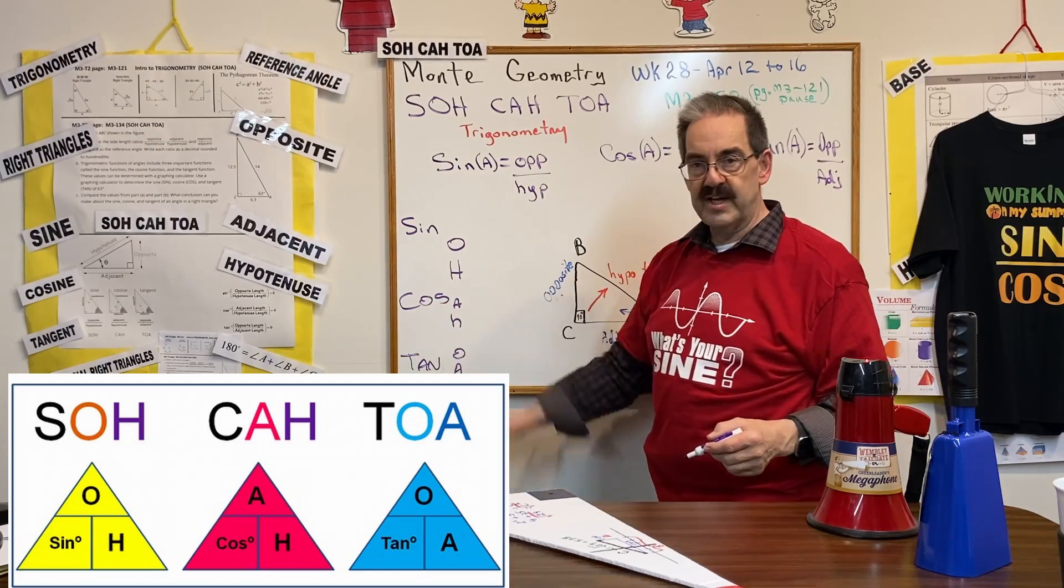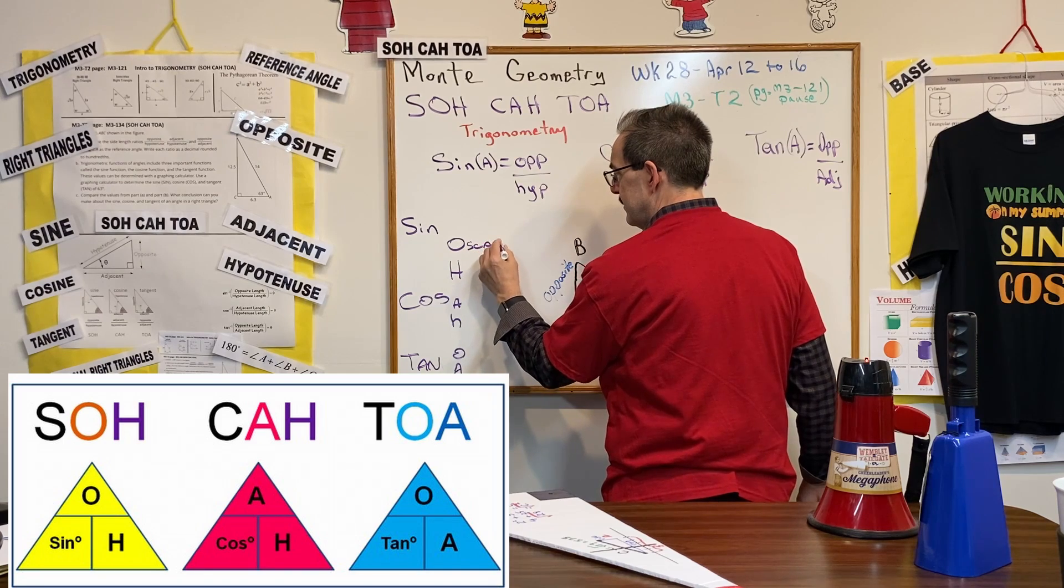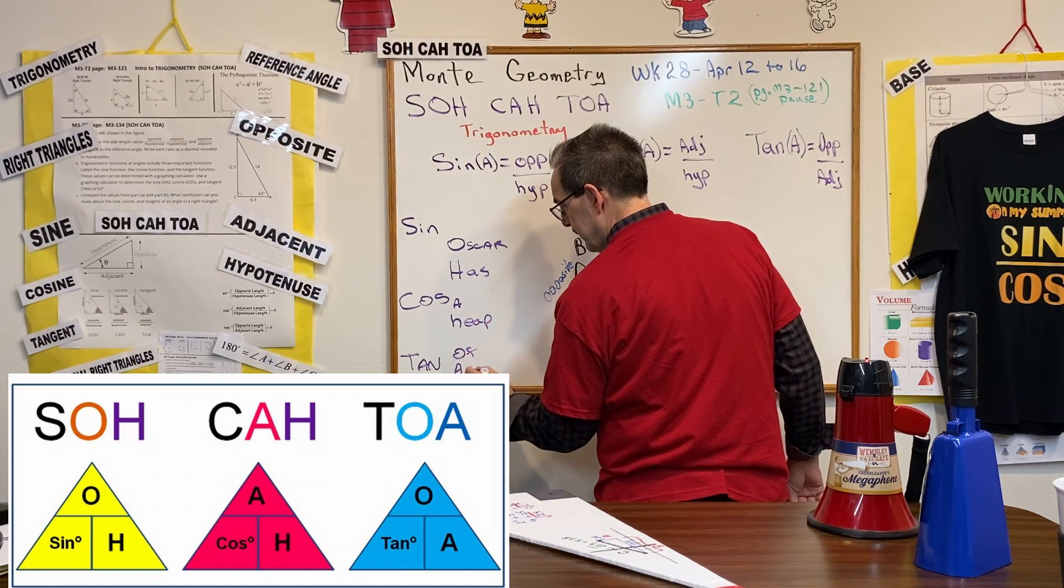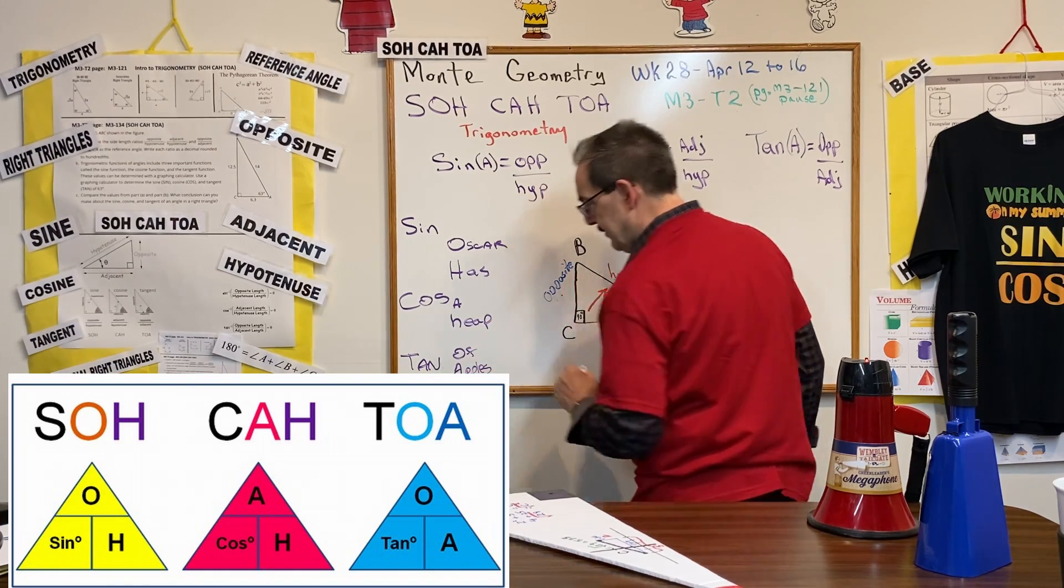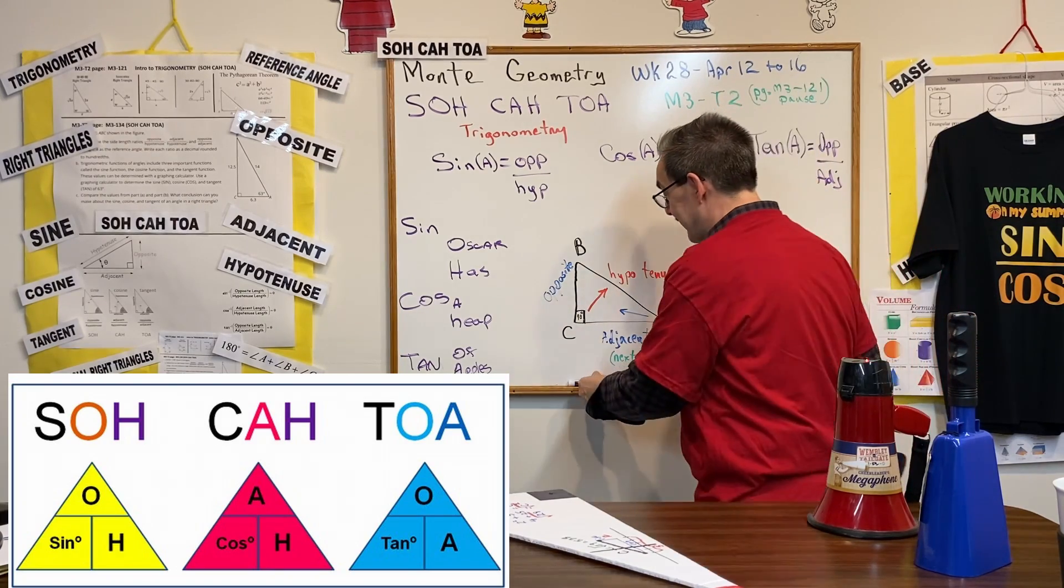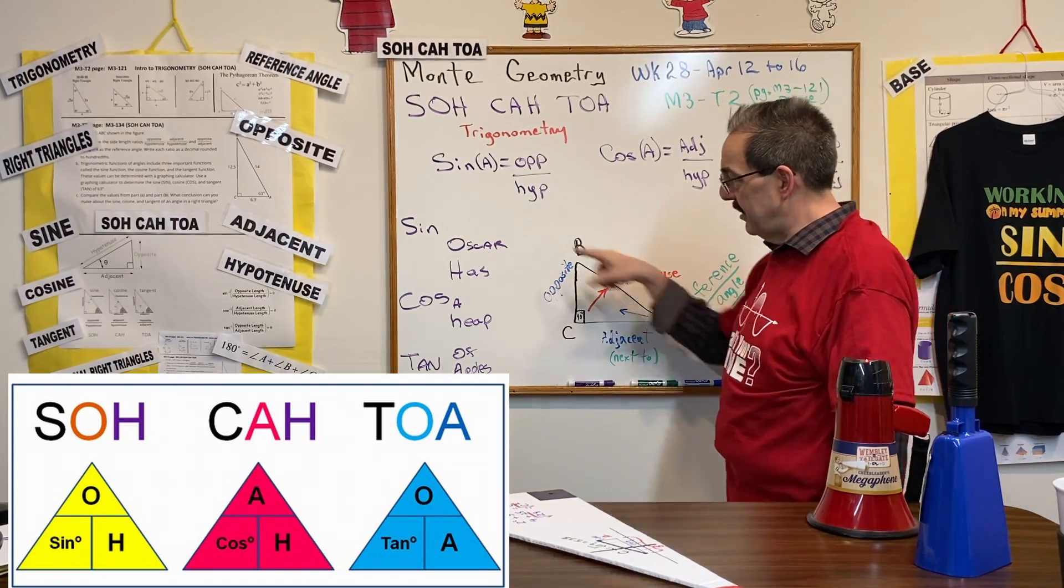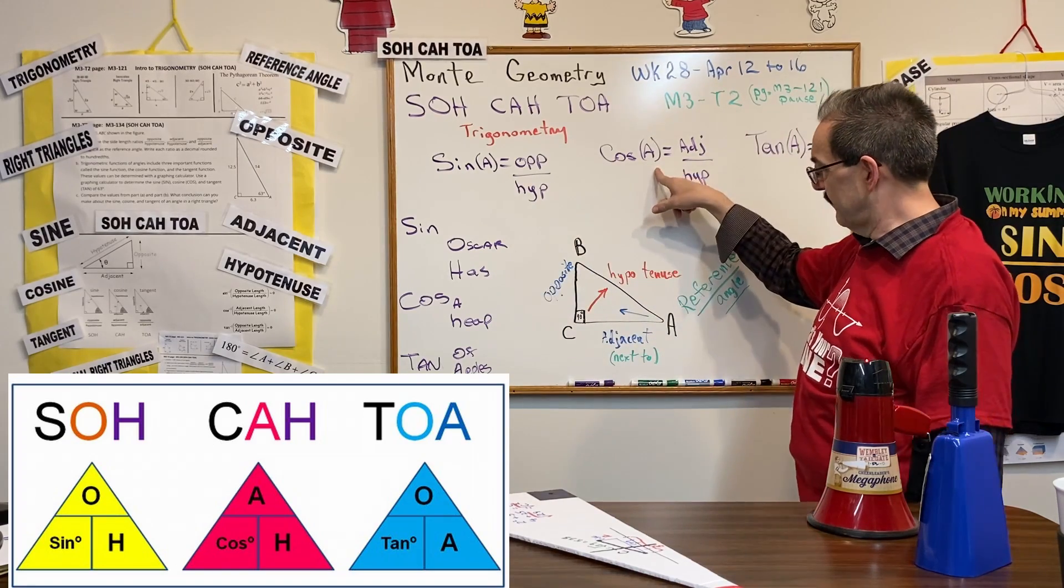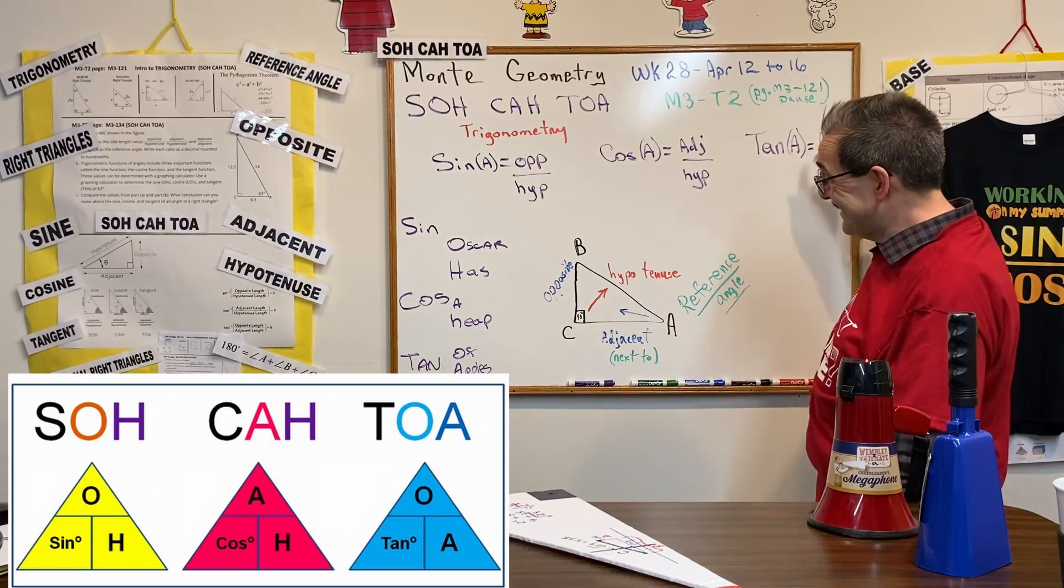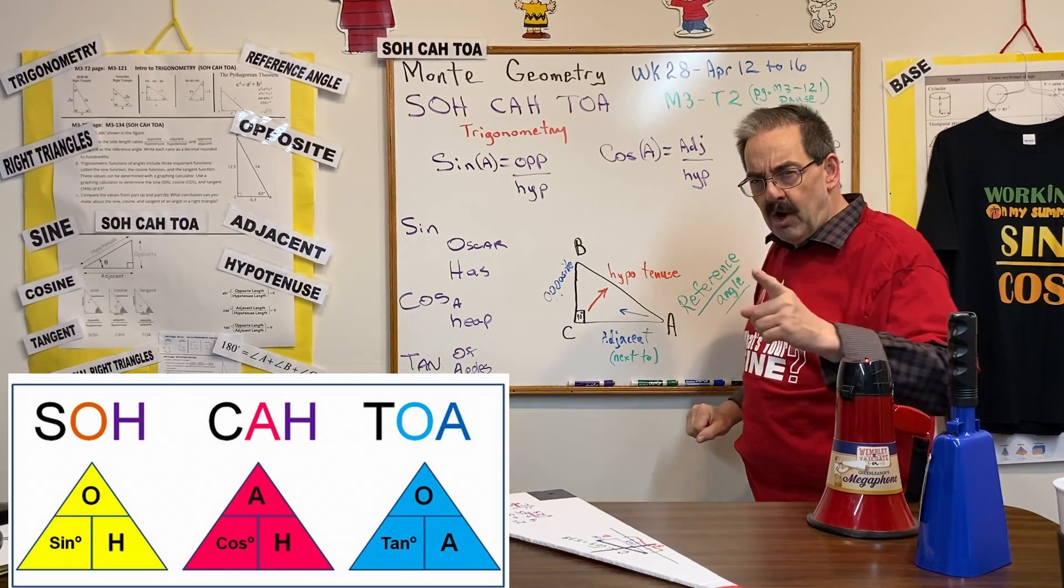...and knew it was sine, cosine, tangent, just like your calculator shows. Mine was Oscar Has A Heap Of Apples. That's how I remembered it. I still remember it to this day. Oscar Has A Heap Of Apples. Okay, so opposite over hypotenuse, opposite over the hypotenuse. Oscar has the cosine of an angle. A heap—the adjacent over the hypotenuse. And the tangent is the opposite over the adjacent, the opposite over the adjacent.